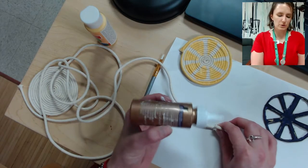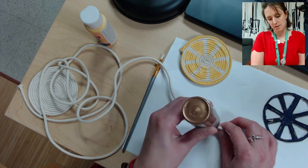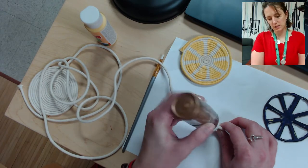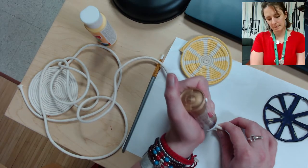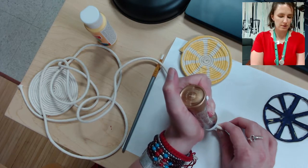Then you're going to add more glue. So you can do about two inches at a time of glue and then you just keep wrapping or rolling the rope.